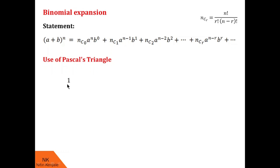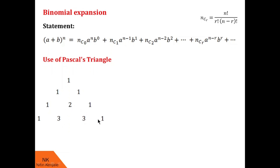The first level has only one number. On the second level there are two numbers — since it starts and ends with one, this layer is: 1, 1. The third layer has three numbers: starting and ending with one, the middle number is 1+1 = 2, giving 1, 2, 1. The fourth layer is 1, 3, 3, 1. The next layer is 1, 4, 6, 4, 1.